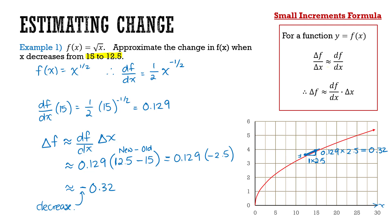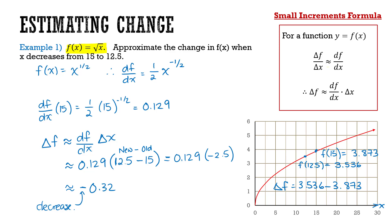Let's look at the difference between this estimate and what actually happened. Using my original f(x) formula, substituting 15 into the equation, the square root of 15 gives me 3.873. Substituting 12.5 into the equation gives me 3.536. The actual change in f would therefore be 3.536 minus 3.873, giving me negative 0.337. We can see that the actual change is indeed different from the estimated change, but they are very close values, and using the derivative to estimate small amounts of change is pretty reasonable.